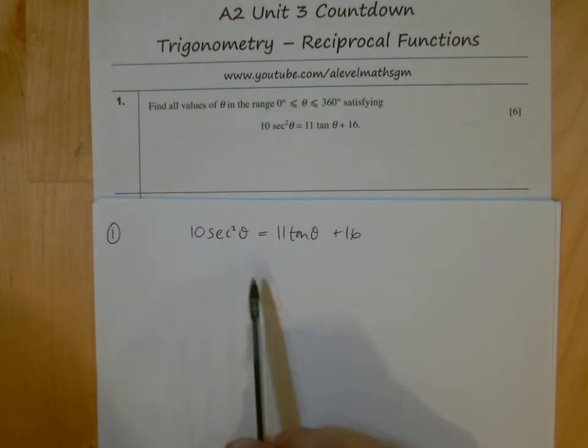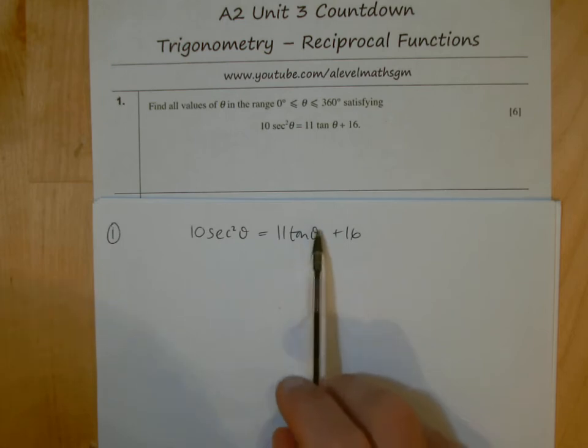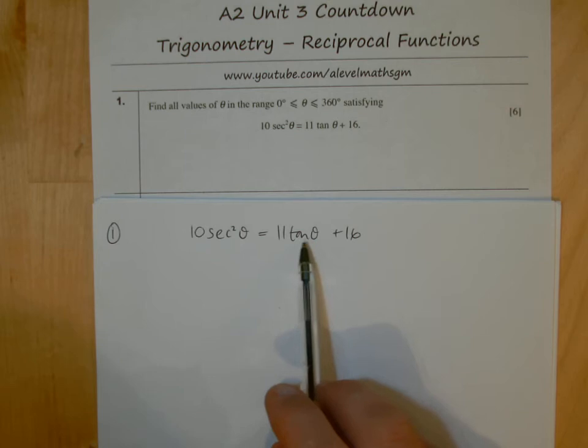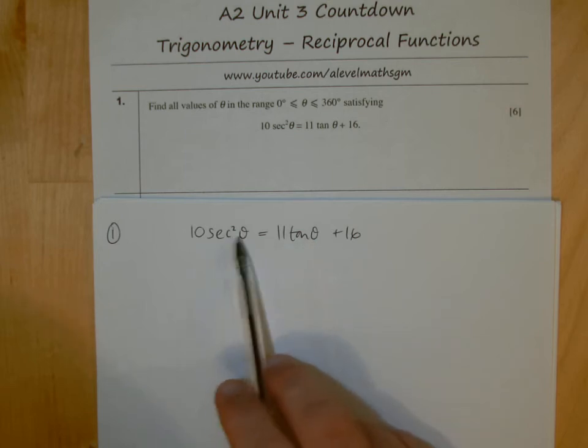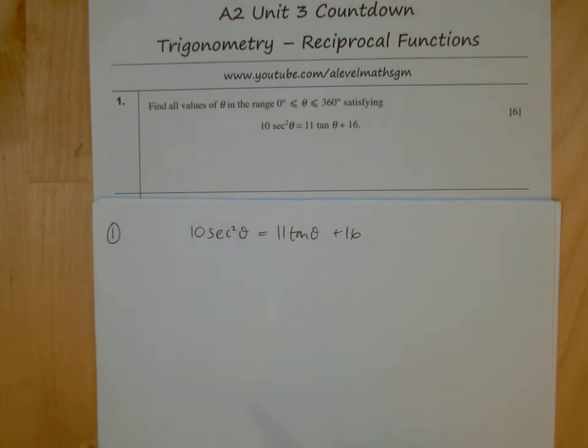We're going to need to change this so we have just one function. There's a function we can change and one we can't. In this case, we cannot change the tan θ because it's just tan θ, not squared. But we can change the sec function here because it's squared. It's the squared function you can always change.